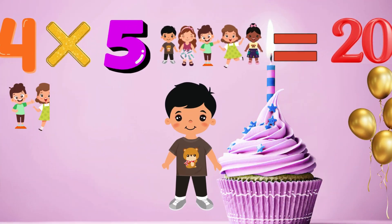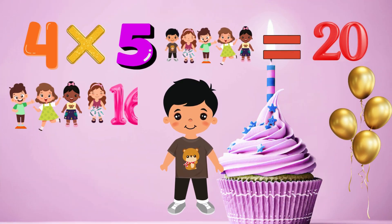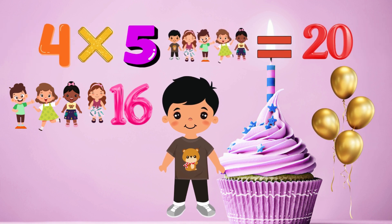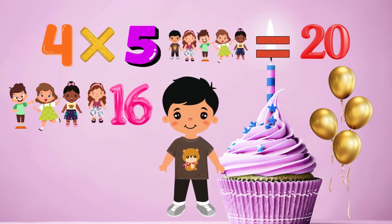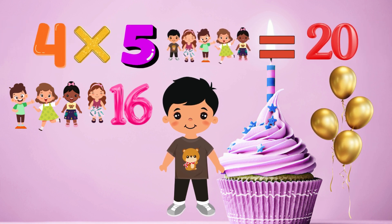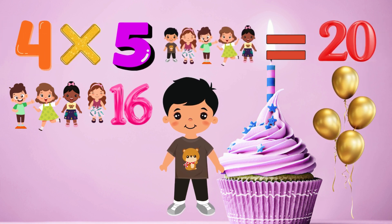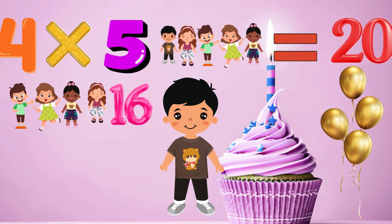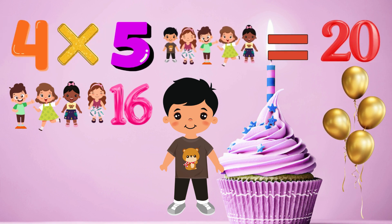Isha used 16 balloons for 4 friends. Adding 4 more for the fifth friend totals 20 balloons. This means that 4 multiplied by 5 is equal to 20.